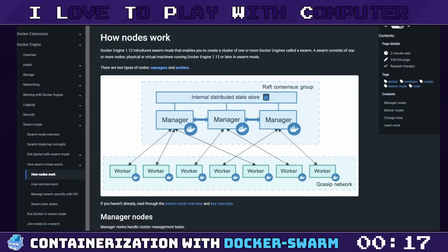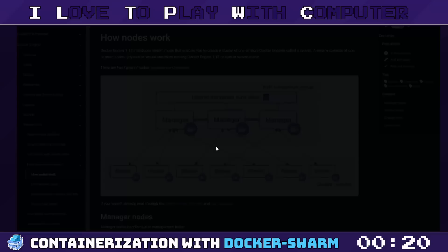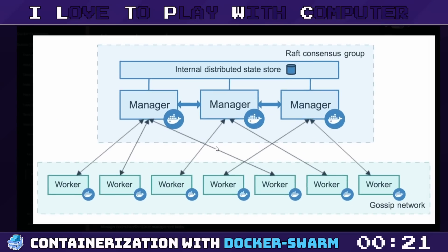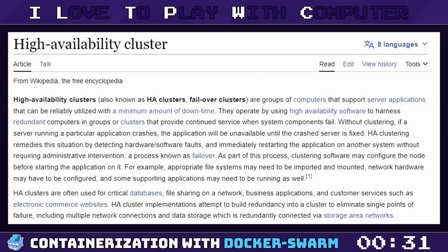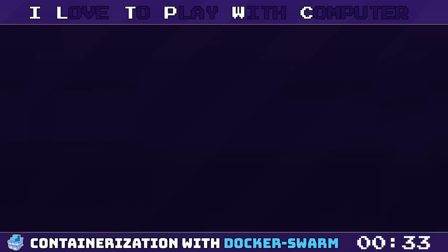To illustrate, let's say you have a simple web application running on a single Docker host, but your user base is growing and you need to scale. That's where Docker Swarm comes in. With Docker Swarm, you can take your single service application and distribute it across multiple hosts, ensuring high availability and a failover strategy.